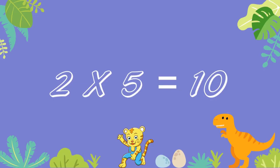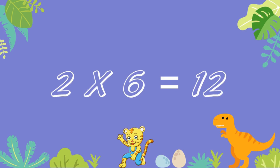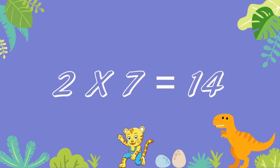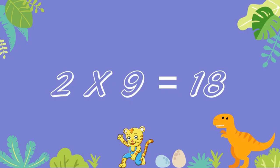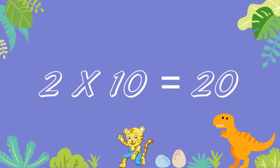2 fives are 10. 2 sixes are 12. 2 sevens are 14. 2 eights are 16. 2 nines are 18. 2 tens are 20.